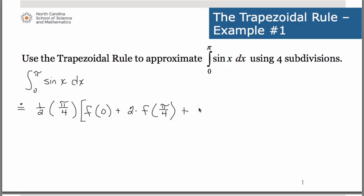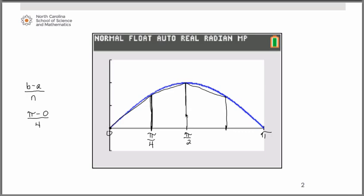To that, we have to add 2 times the function value at pi over 2. That would be this length right here. And that is accounting for the bottom base of the second trapezoid and the top base of the third trapezoid.